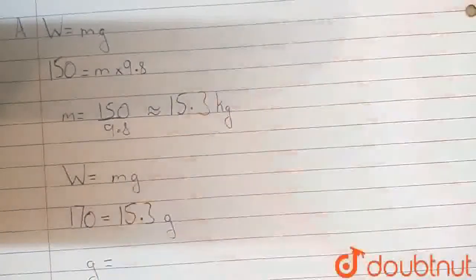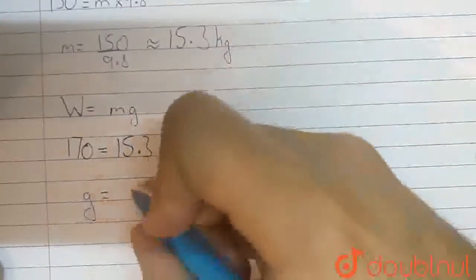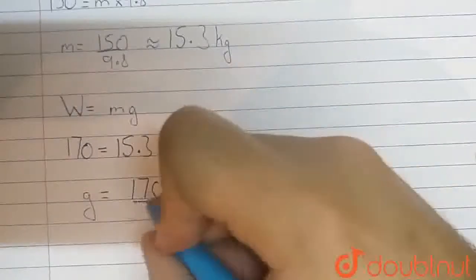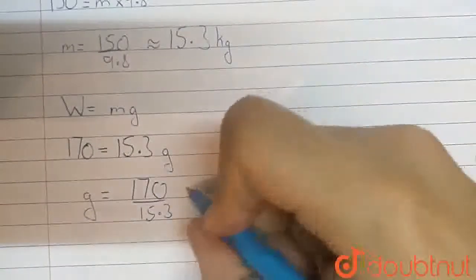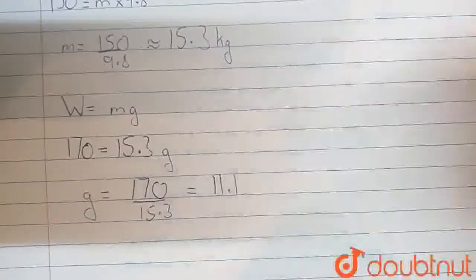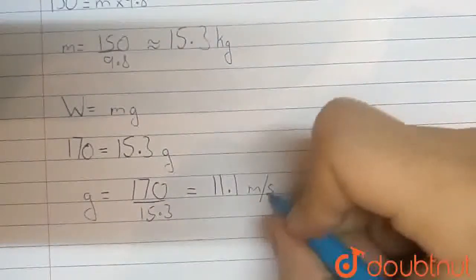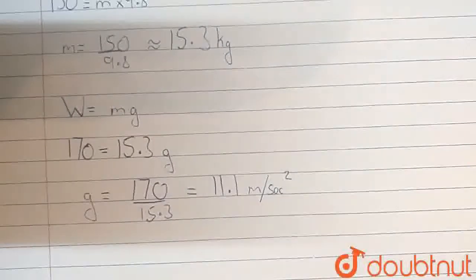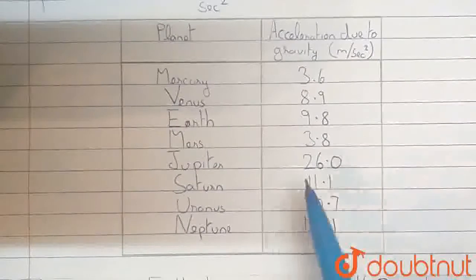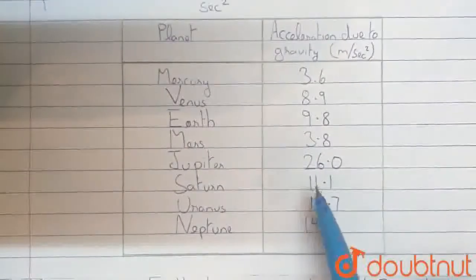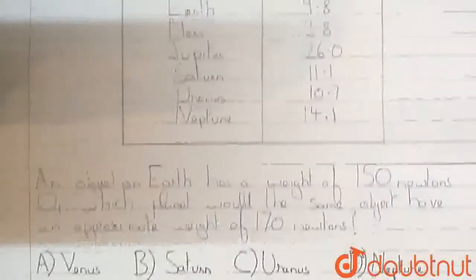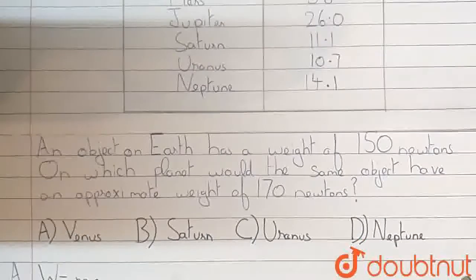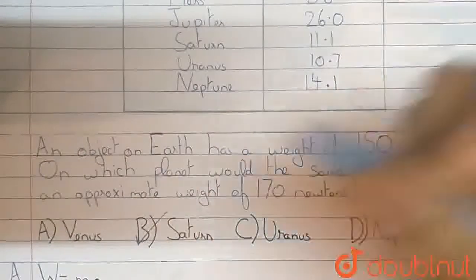So we will get g is equal to 170 divided by 15.3. This comes up to approximately 11.1 meters per second squared. Now, if we look at the chart that was given to us, we can see that 11.1 meters per second squared corresponds with the planet Saturn. Hence, we know that on Saturn this object weighs 170 newtons. So we will choose B, which is Saturn.